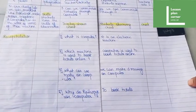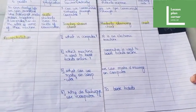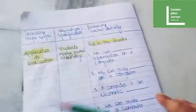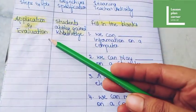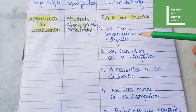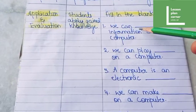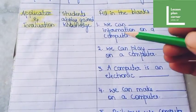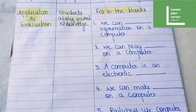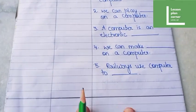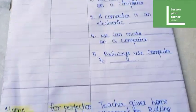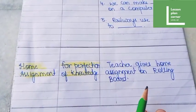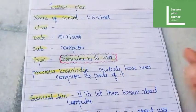Application and evaluation — here you can see fill in the blanks. You can see the list of questions or fill in the blanks that we have to give to students. This many questions is enough. The last section is home assignment. For perfection of knowledge we have to give home assignment. So this was my lesson plan.